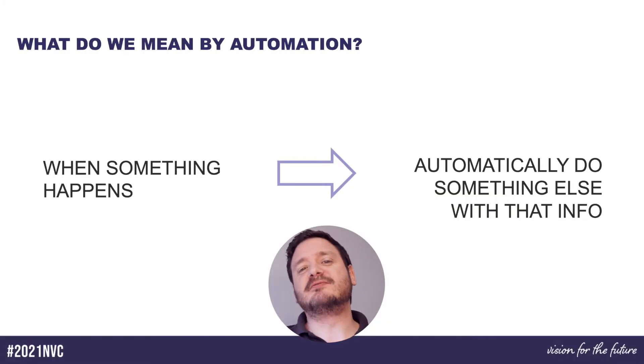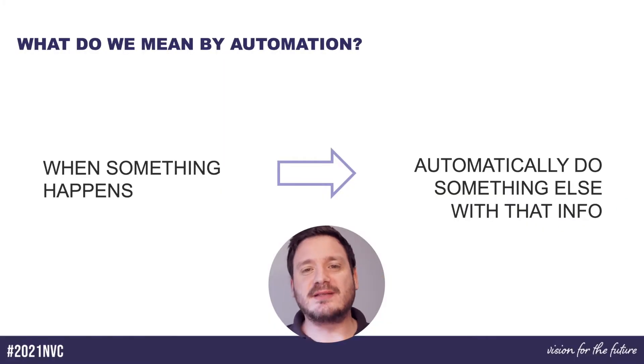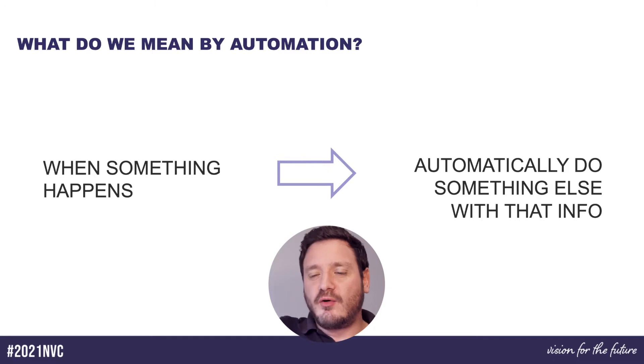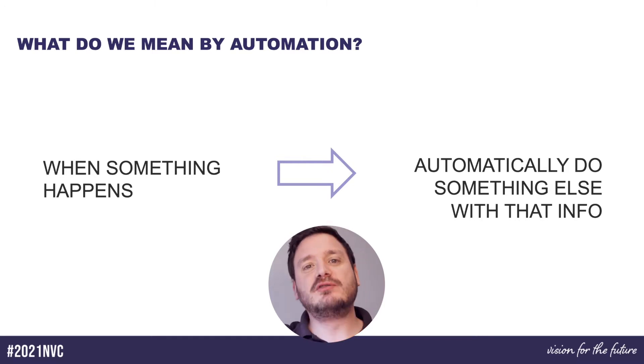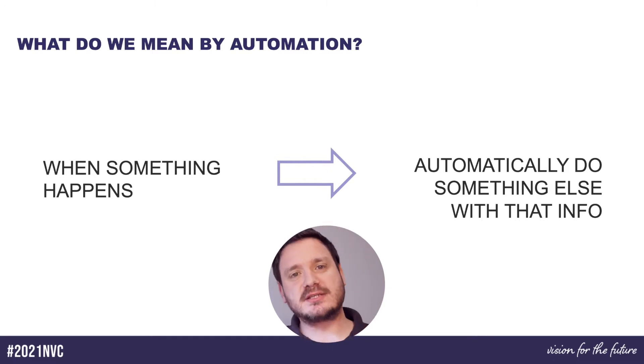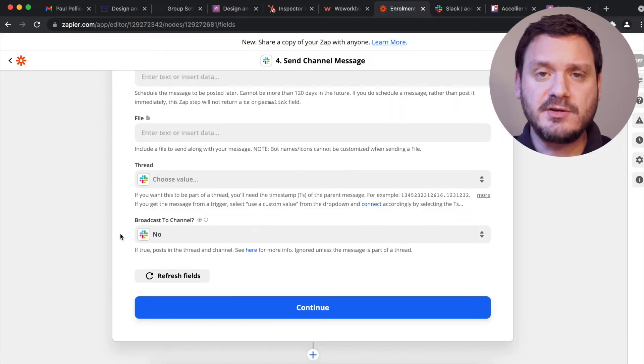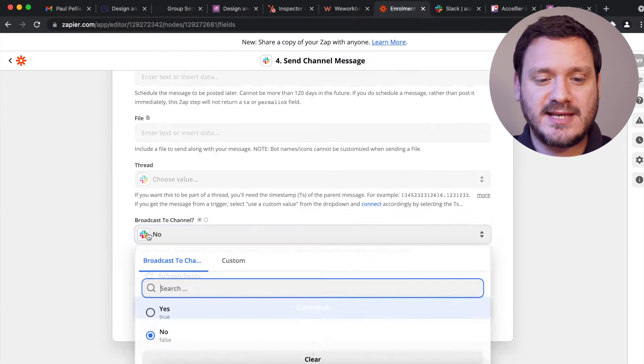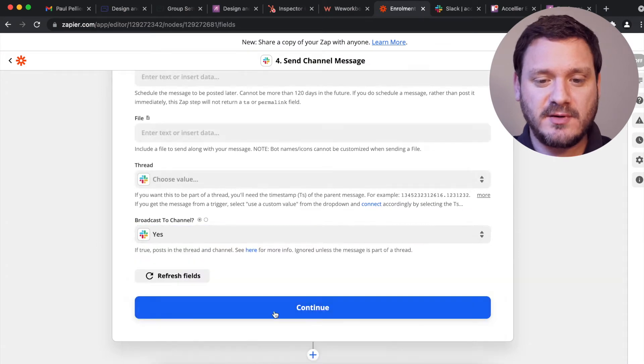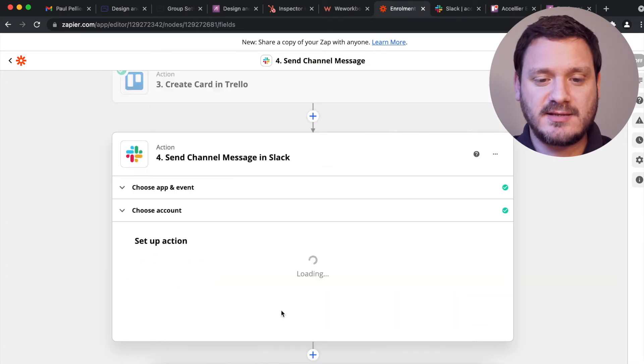The basics of automation is that when something happens here, automatically go and do something else over there. You can have a play with that and see what works for you.